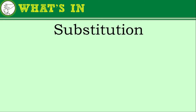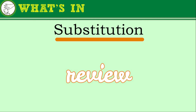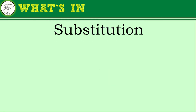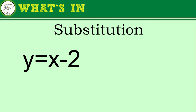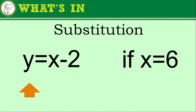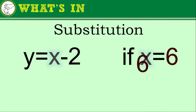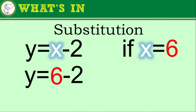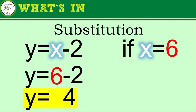Before we proceed with the Composition of Functions, we will first review the substitution rule of algebra. If you're given y is equal to x minus 2, and x is equal to 6, what would be the value of y? You will use substitution — replace x with 6, so you have y equals 6 minus 2, which gives y equals 4.